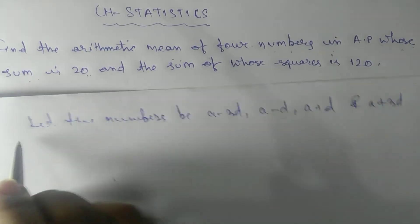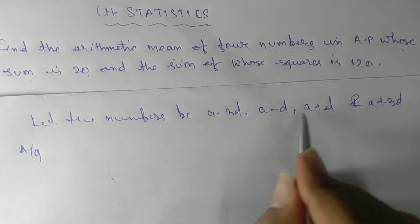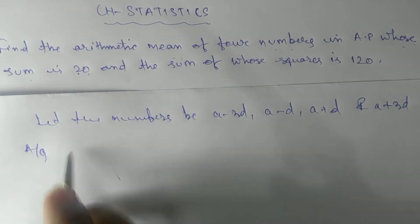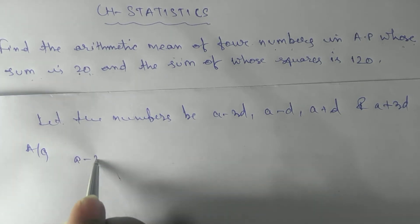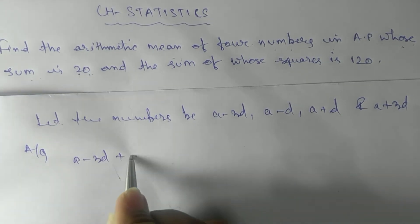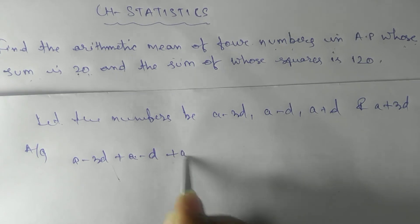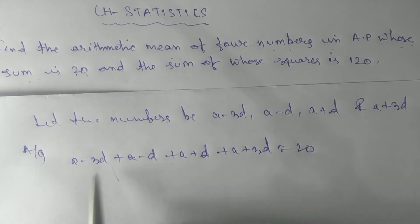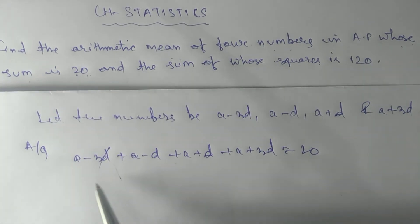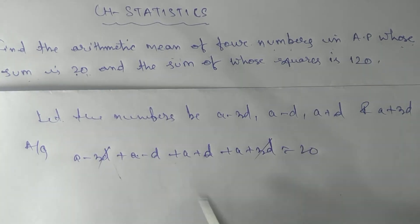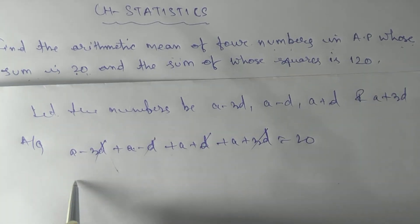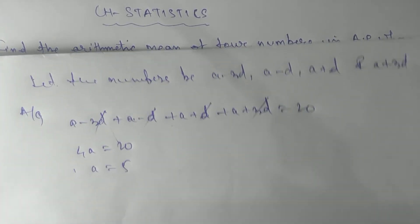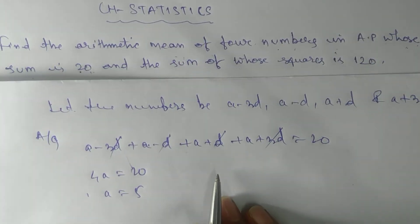According to the question, the sum of these numbers is 20. So (a−3d) + (a−d) + (a+d) + (a+3d) = 20. The 3d terms cancel and the d terms cancel, giving 4a = 20, so a = 5.